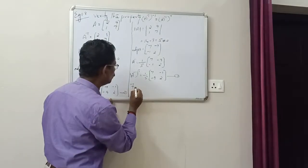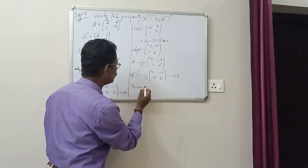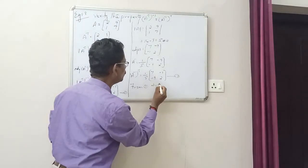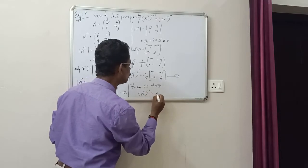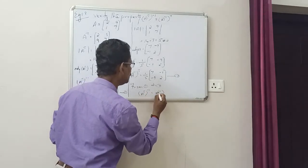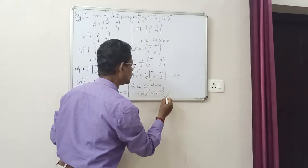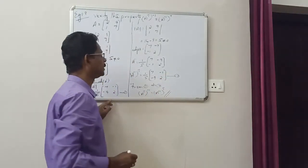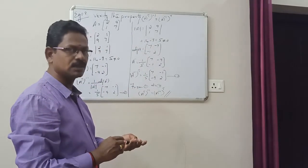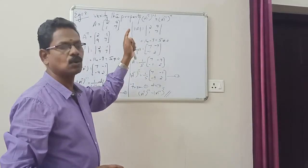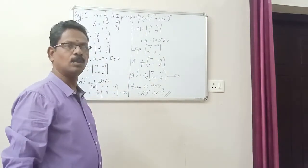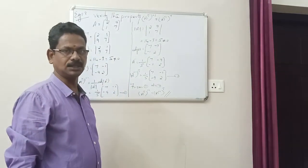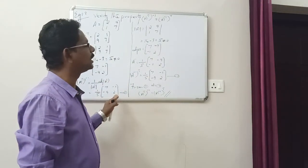From equations 1 and 2, A transpose the whole inverse equals A inverse the whole transpose. Therefore the property is verified. Example 1.8 is complete.